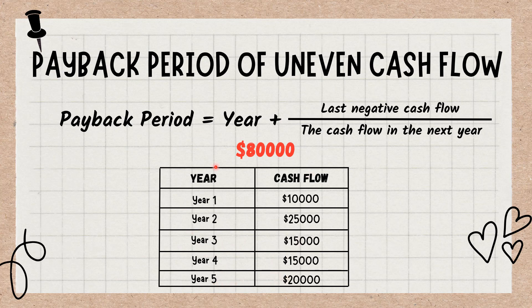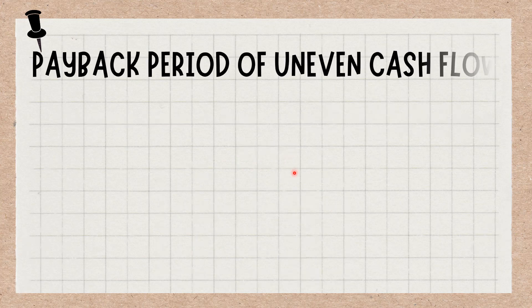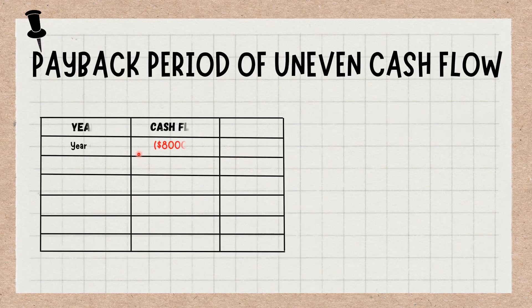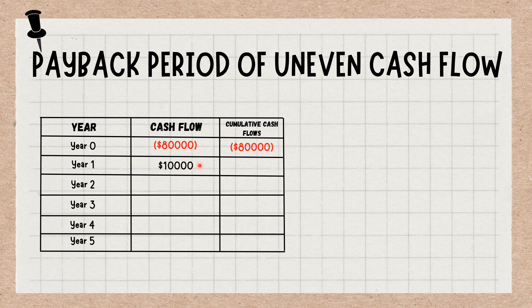What would be the payback period? To calculate it, first make a table where the company invested $80,000 in year zero. After that, we will put other cash flows under it. Then we will subtract each cash flow from the investment and write the remaining balance. So we have $70,000, $45,000, $30,000, and $15,000.